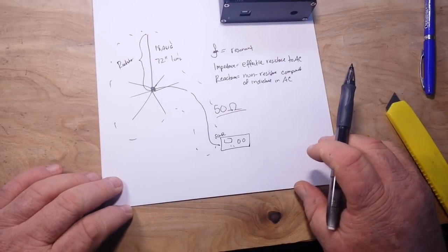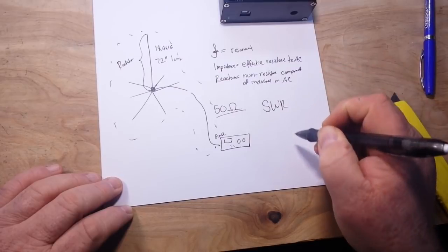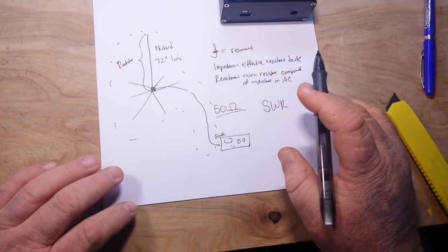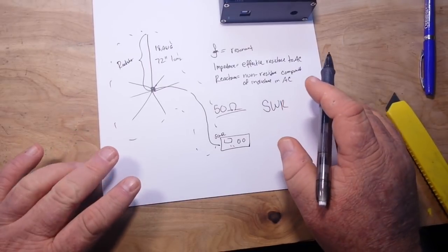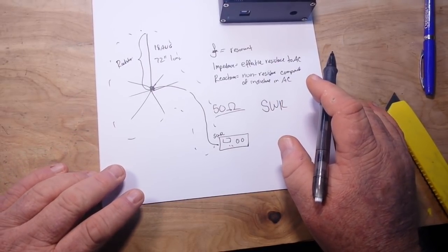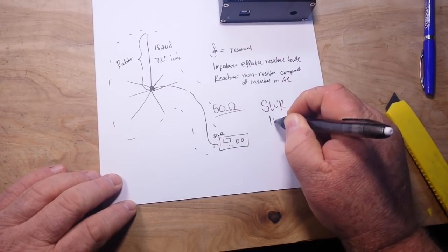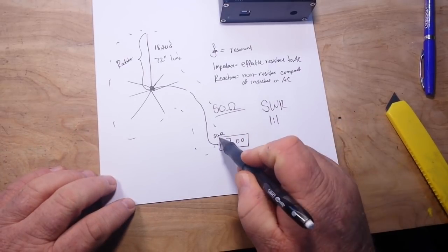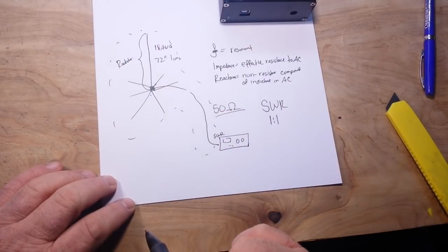If it's not, then we start having a problem with something called SWR, standing wave ratio. And the standing wave ratio is simply a measure of impedance mismatch. What we want to see is a standing wave ratio of one to one. That's perfect. That means radio 50 ohms, antenna plus feed line 50 ohms.